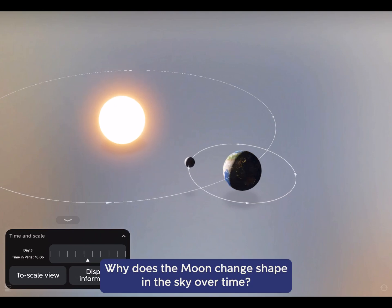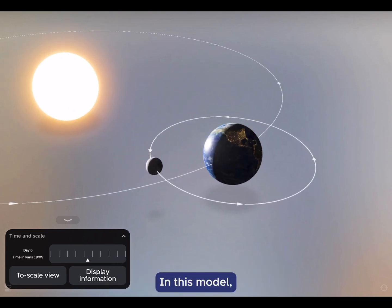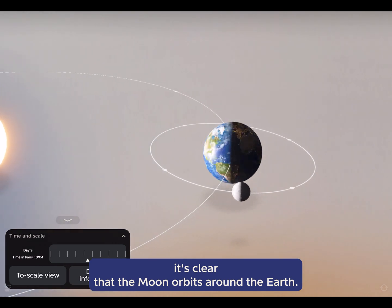Why does the Moon change shape in the sky over time? In this model, it's clear that the Moon orbits around the Earth.